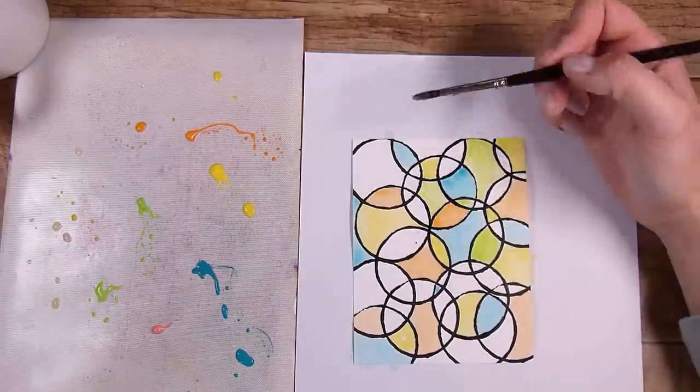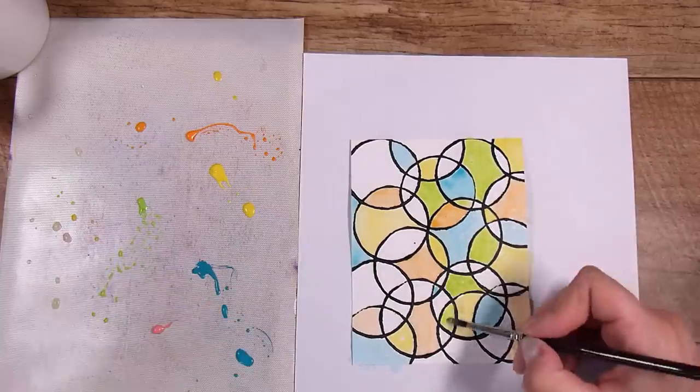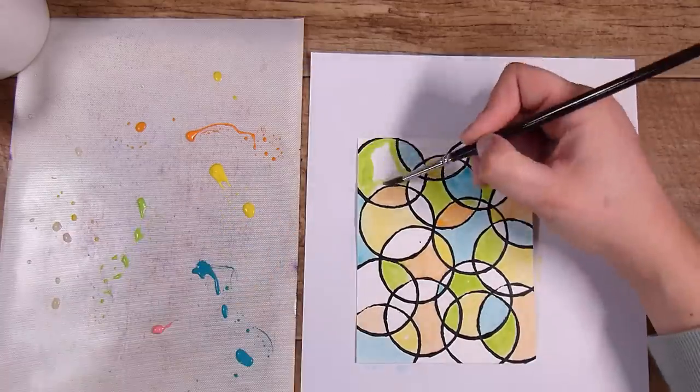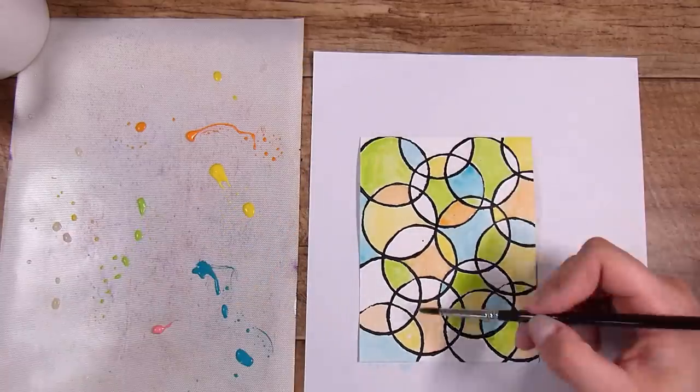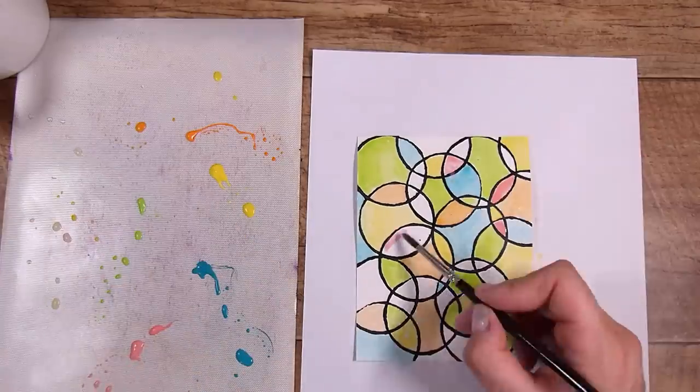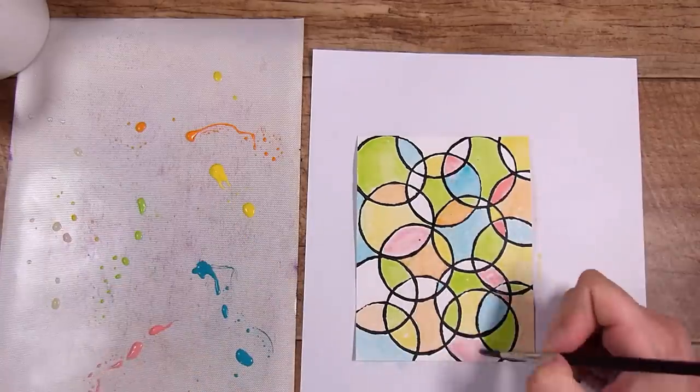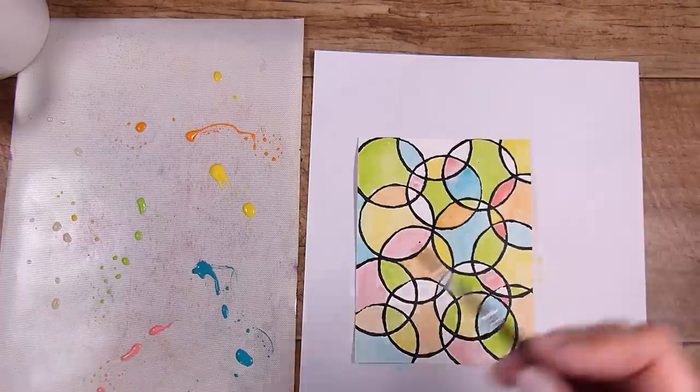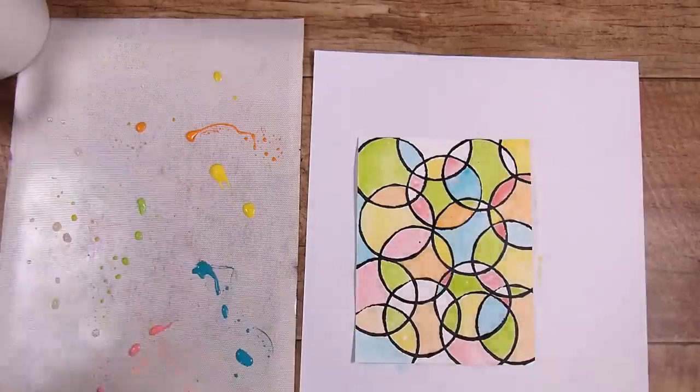I am just watering these down so that I get different strengths, and I have around five colors or so of the Dina Wakely acrylic paints. Then I am just watercoloring in each of these different little spots. Of course you could use pencils, you could use alcohol markers - you could get some really good shading actually if you use some alcohol markers.